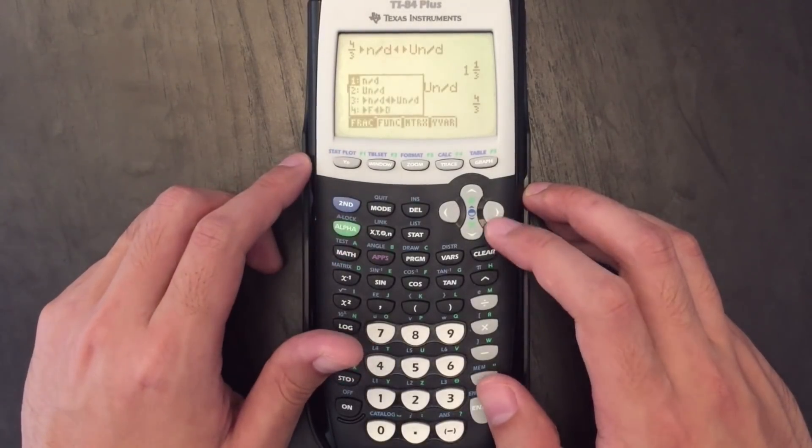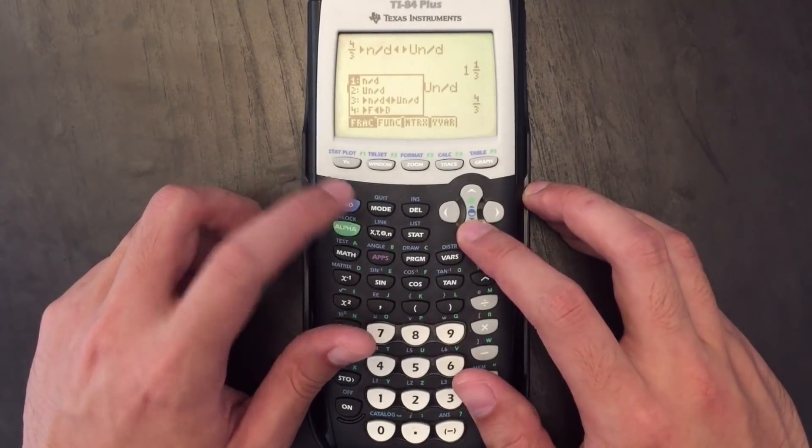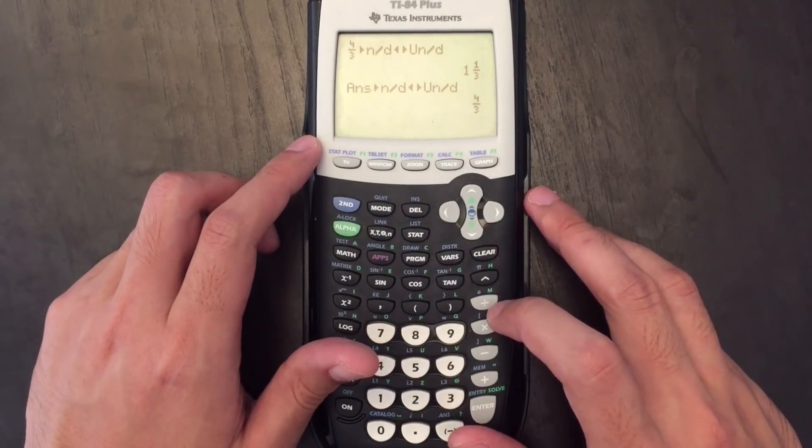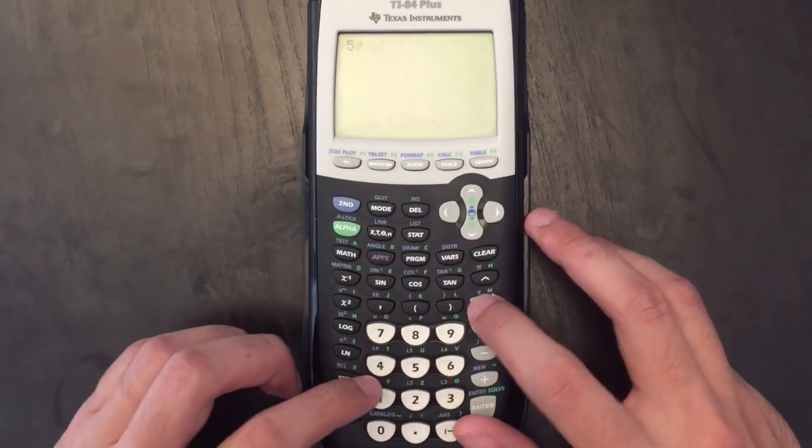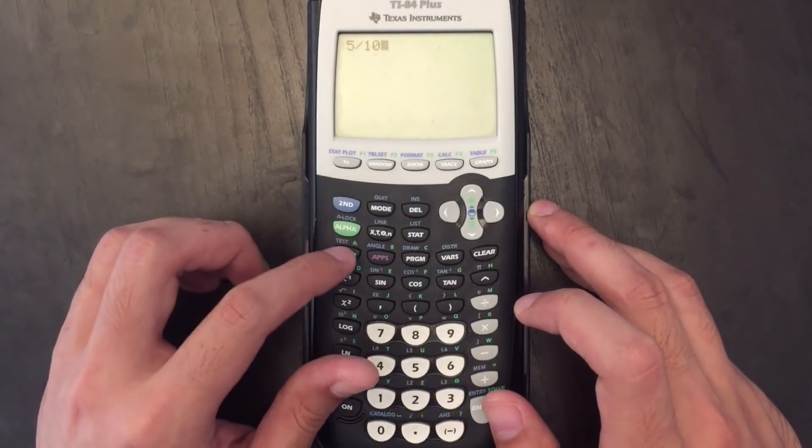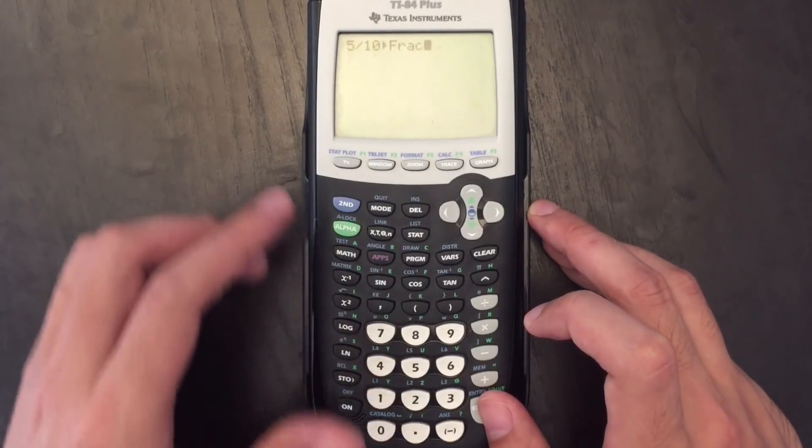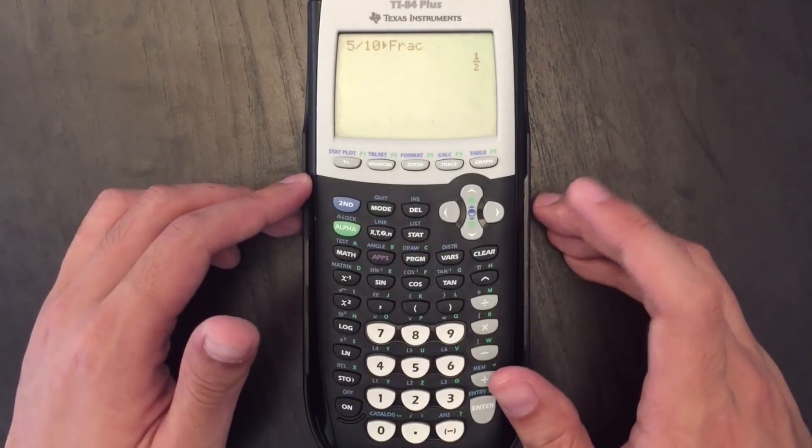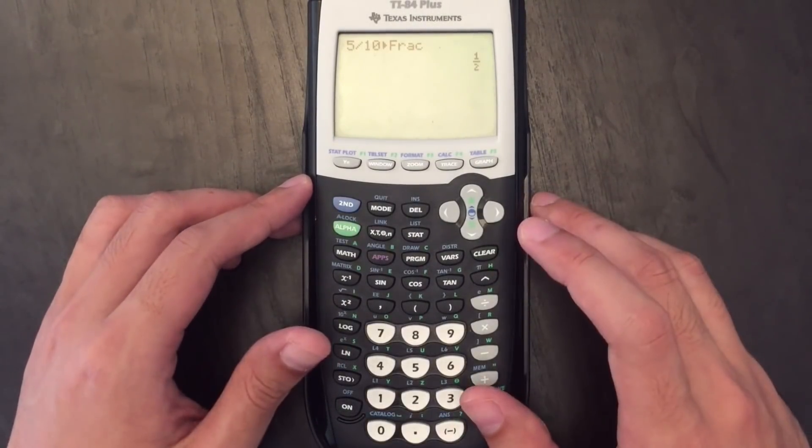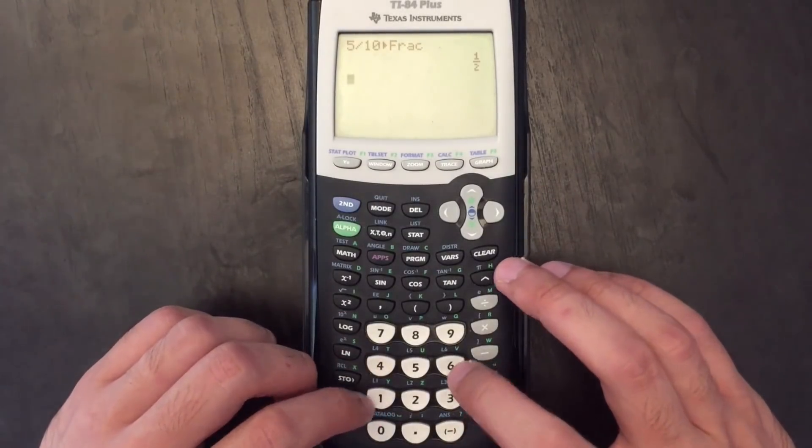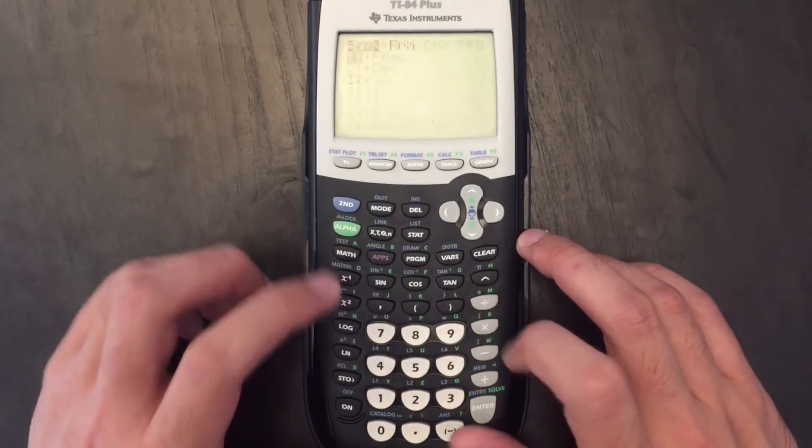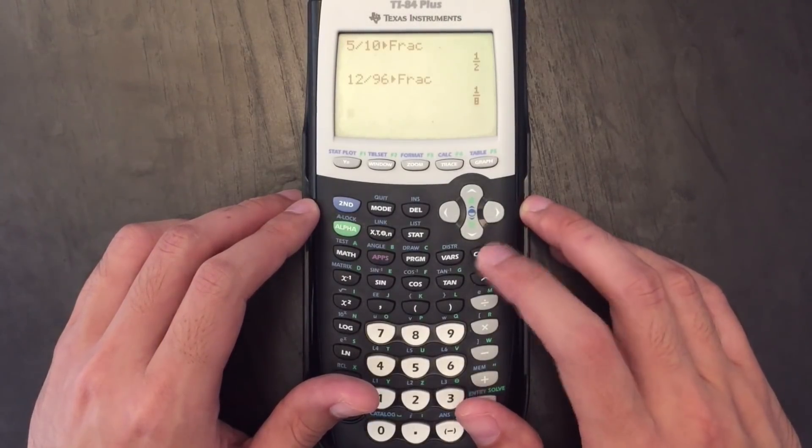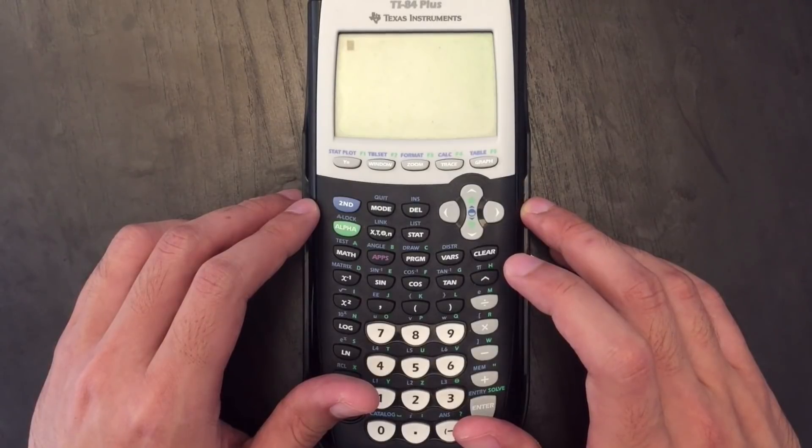So this is a helpful menu if you're working with a lot of fractions and you need to convert back and forth. So quitting out of that the next thing that I want to show you is how to reduce fractions. So let's say that I have five tenths we all know that reduces to one half. I can go to the math menu and use the two fraction method again to actually reduce that down to one half. Now that might not seem very helpful because five over ten is kind of an easy fraction to work with but let's say I have something a bit more complicated like 12 over 96. I can go ahead and reduce that down to one eighth.